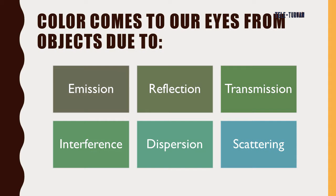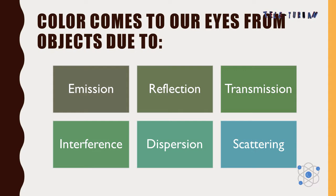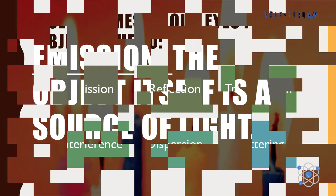Color comes to our eyes from objects due to the following: Number 1, emission. Number 2, reflection. Number 3, transmission. Number 4, interference. Number 5, dispersion. And last, scattering.